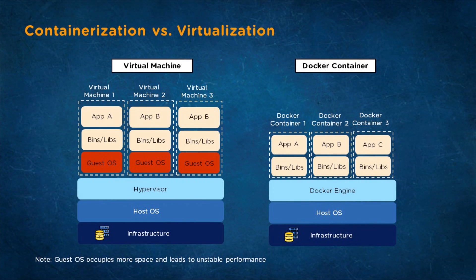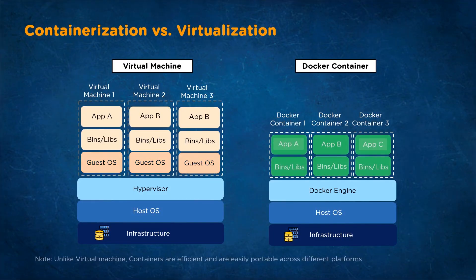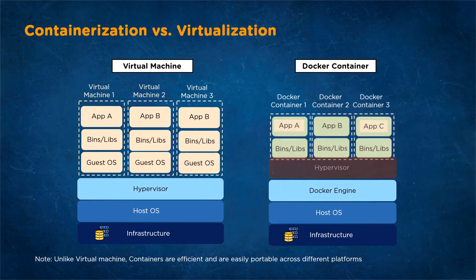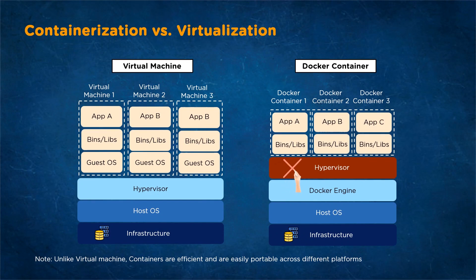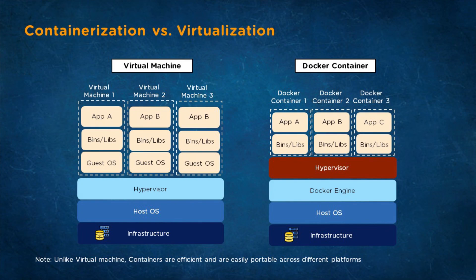Due to the extra layer in a VM, an application takes quite a long time to start. On the left-hand side is VM and on the right-hand side is Docker. In VM, the guest operating system occupies more space and leads to unstable performance, and makes VMs less efficient than physical machines. Docker, on the other hand, is efficient — unlike VMs, Docker doesn't have a hypervisor or guest operating system and consists of containers that are efficient and easily portable.